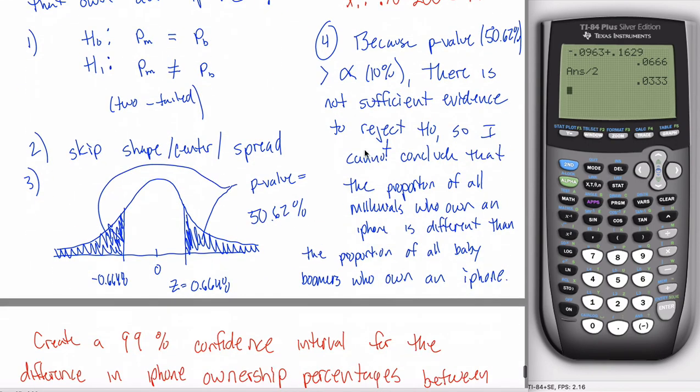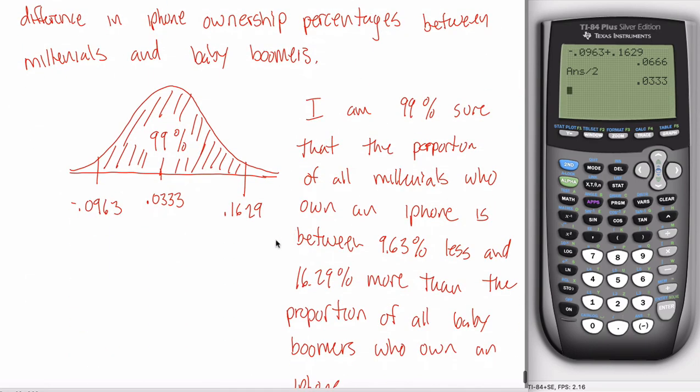So if you had decided to do this a little bit different and made this N1, X1, N2, X2, it would be totally fine. It's just your picture would look a little bit different. This would be negative 0.1629, this would be positive 0.0963, and this would be negative 0.0333, because then everything would be relative to the baby boomers if you made them the first group. Hopefully that makes sense.